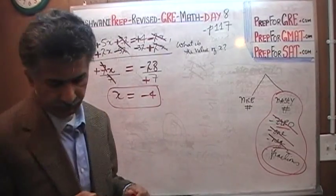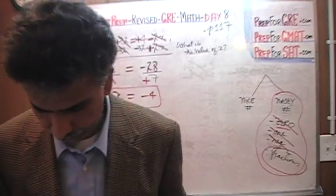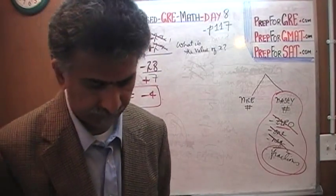That's it. The answer is x equals negative 4. That's what it is. Very simple, very straightforward.